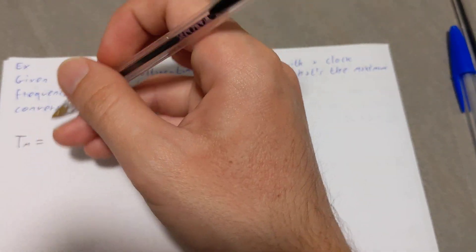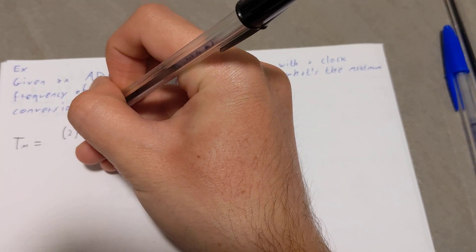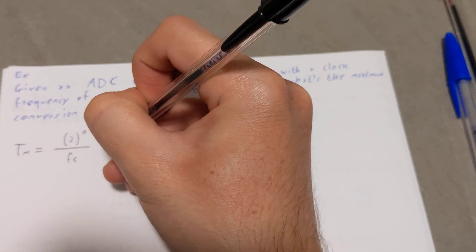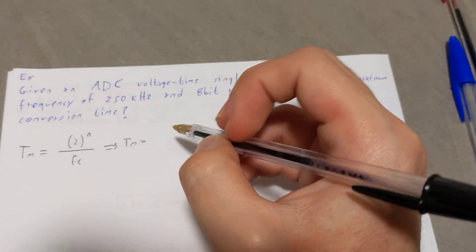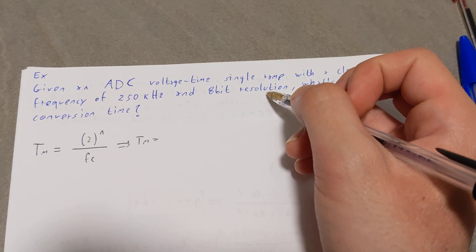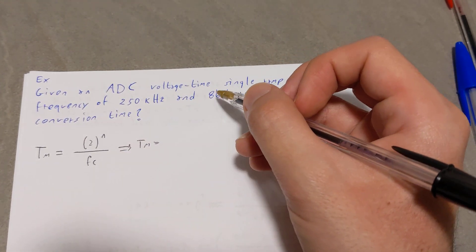So tm, the maximum time, is going to be given by 2 to the power of n over fc. Now what's 2 to the power of n and what's fc? Well, 2 to the power of n is 2 to the power of the resolution. So in this case, 2 to the power of 8.